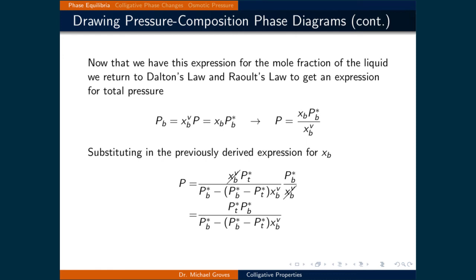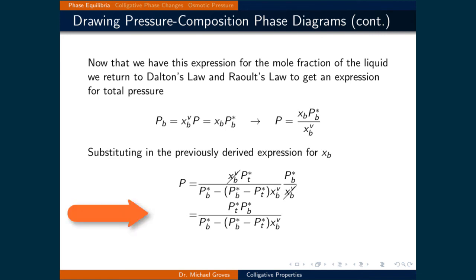Now that we have the expression for the mole fraction of benzene in the liquid, we return to Dalton's law and Raoult's law to get an expression for total pressure. The partial pressure of benzene equals y_benzene·P_total, which also equals x_benzene(liquid)·P*_benzene. Rearranging gives P_total = x_benzene(liquid)·P*_benzene / y_benzene. Substituting in the previously derived expression for x_benzene(liquid), the total pressure equals P*_toluene·P*_benzene / [P*_benzene − y_benzene·(P*_benzene − P*_toluene)]. This expression divides the liquid-vapor phase from the vapor phase.